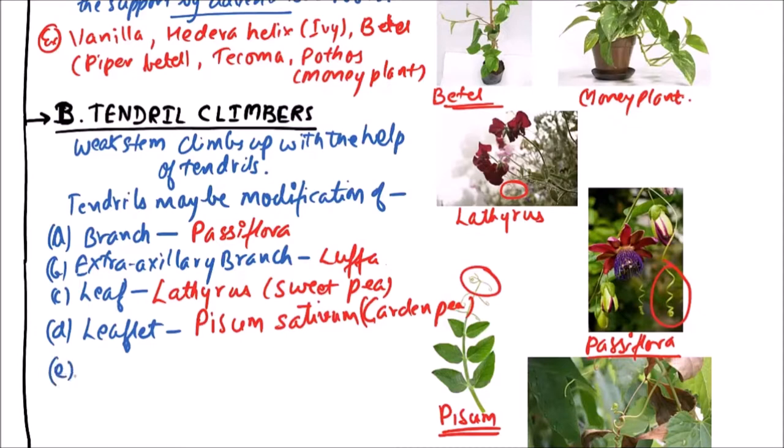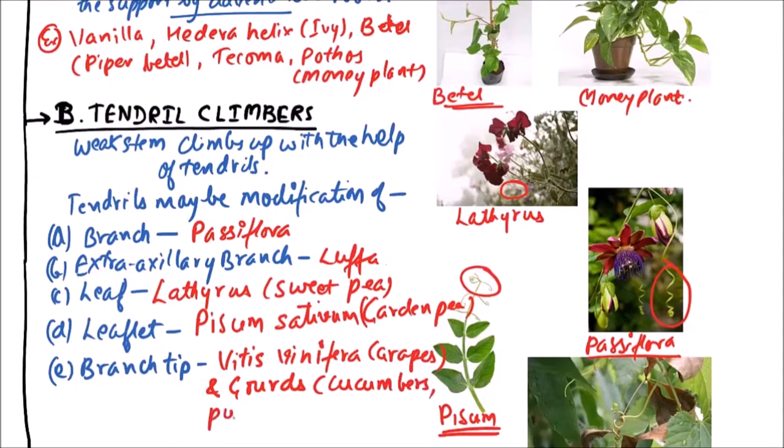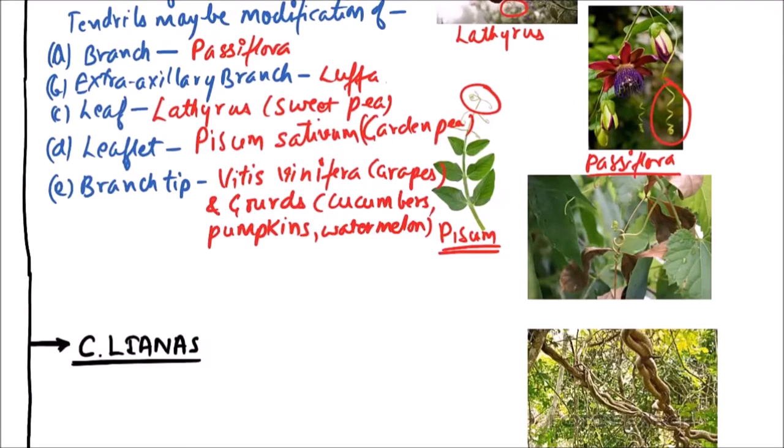Tendrils can also be modified form of branch tip as in case of Vitus vinifera, grapes and also gourds like cucumbers, pumpkins, even watermelon. We can observe the tendrils, this is vitus and these are the tendrils which are modification of branch tip.